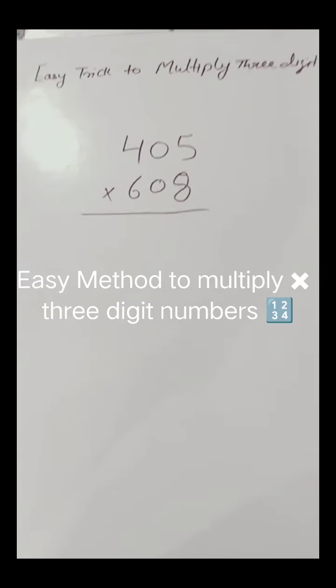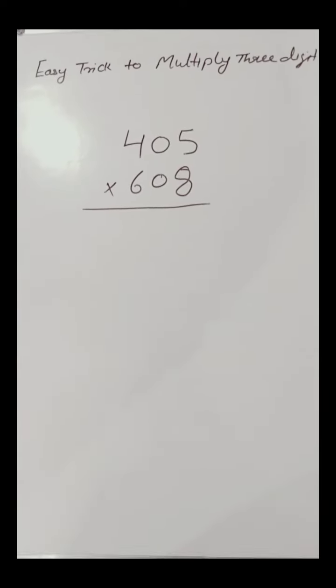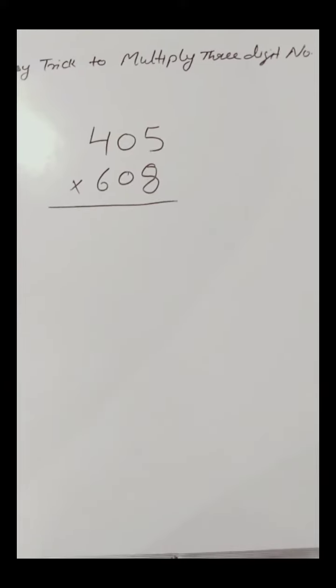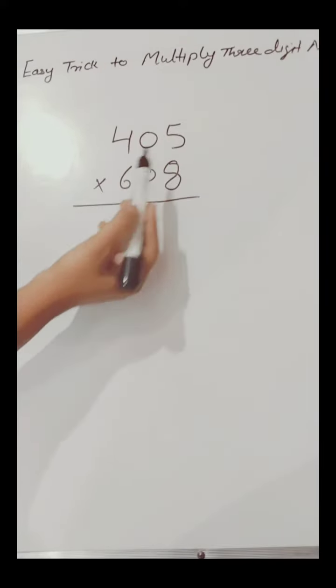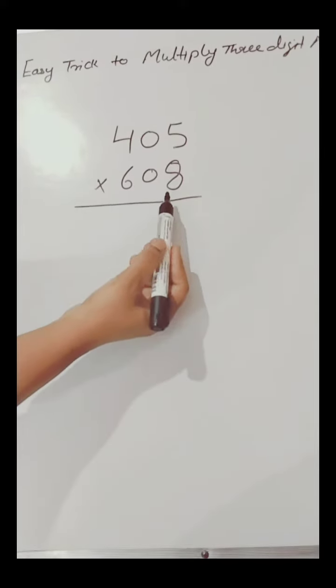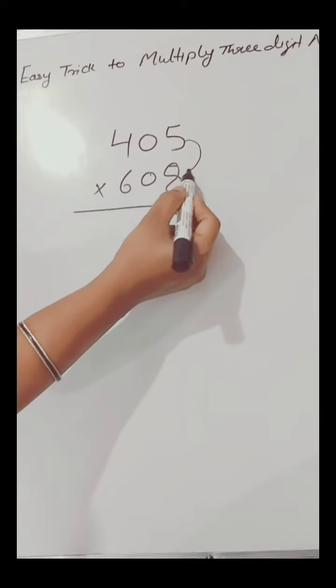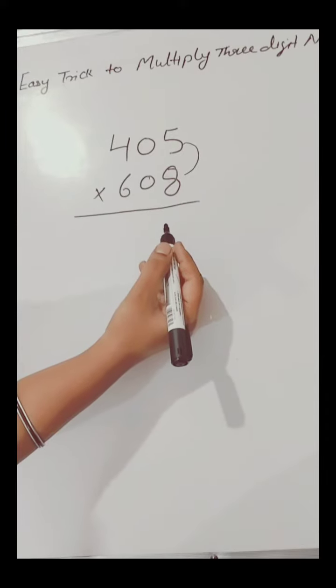Hello friends, in this video I am going to tell you an easy trick to multiply 3-digit numbers. Here we have 405 × 608. Firstly, we will multiply the digits at the ones place, which is 5 and 8.